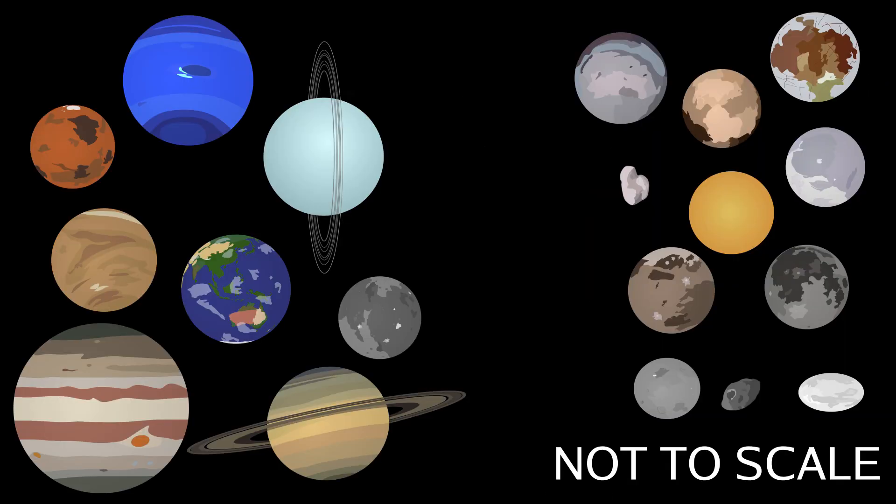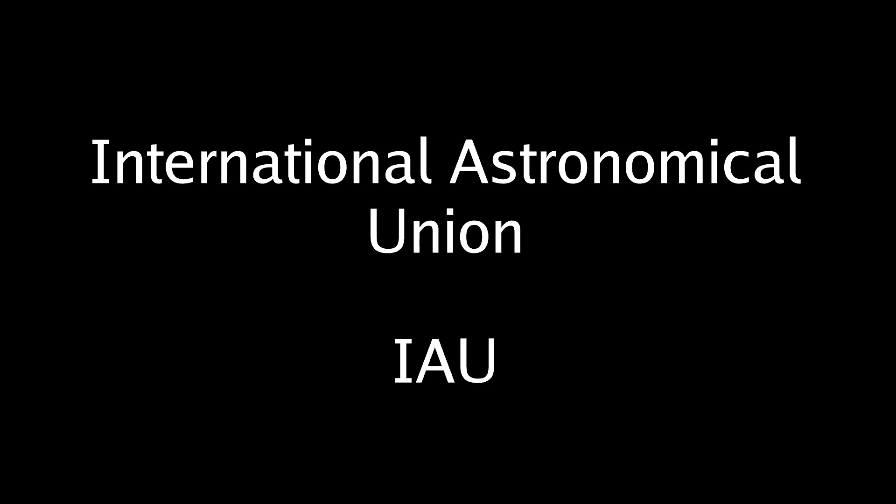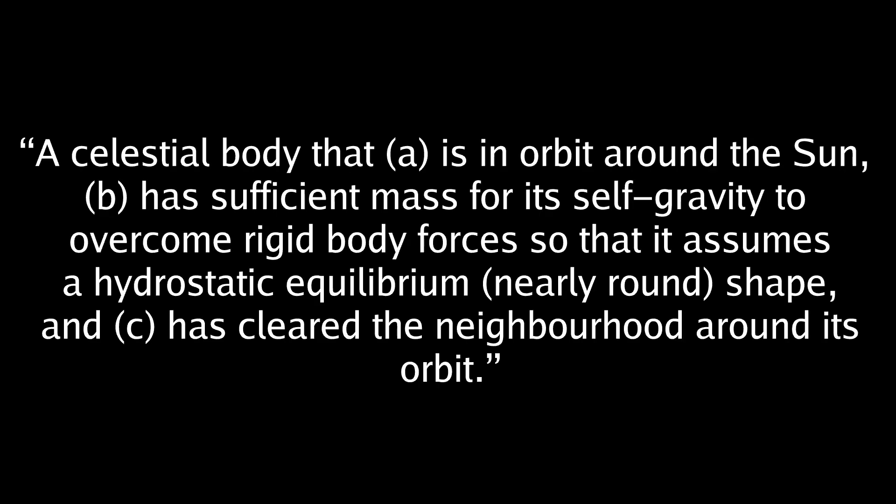What is the formal definition that separates these objects from these objects? Well, the International Astronomical Union, or IAU, came up with the definition for a planet. It is as follows: a celestial body that A, is in orbit around the sun.